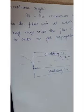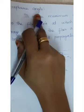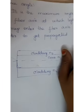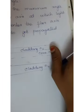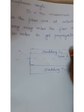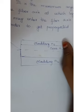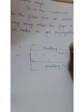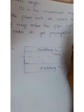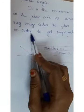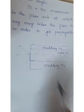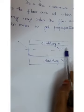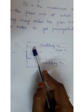The next topic is the acceptance angle. The acceptance angle is the maximum angle to the fiber axis at which light may enter the fiber in order to get propagated. So in order to get the light propagated, the light ray may enter the fiber axis at this angle.